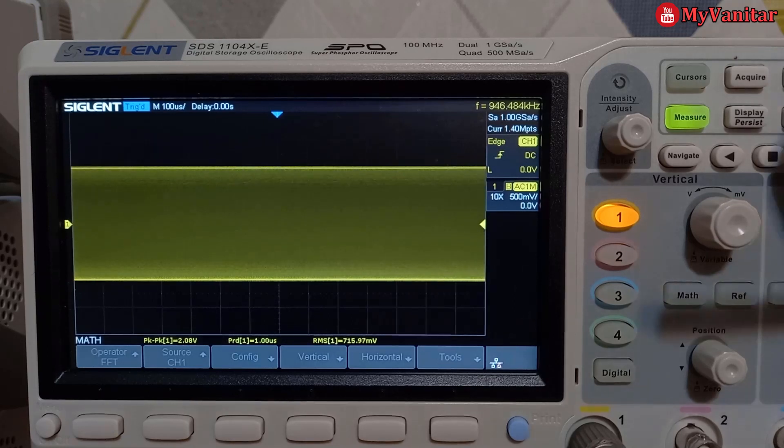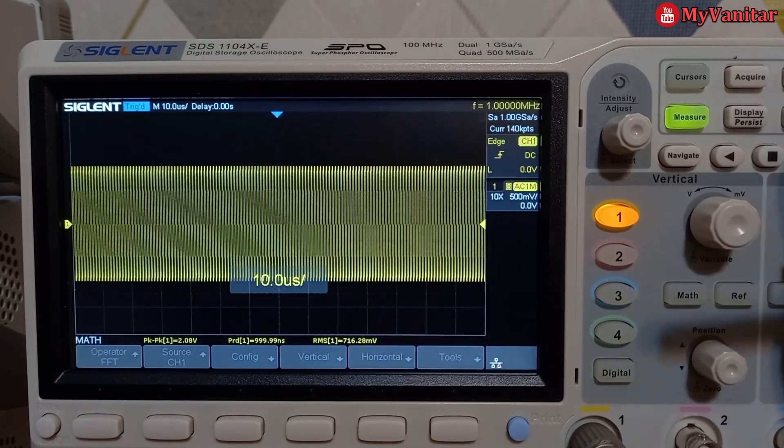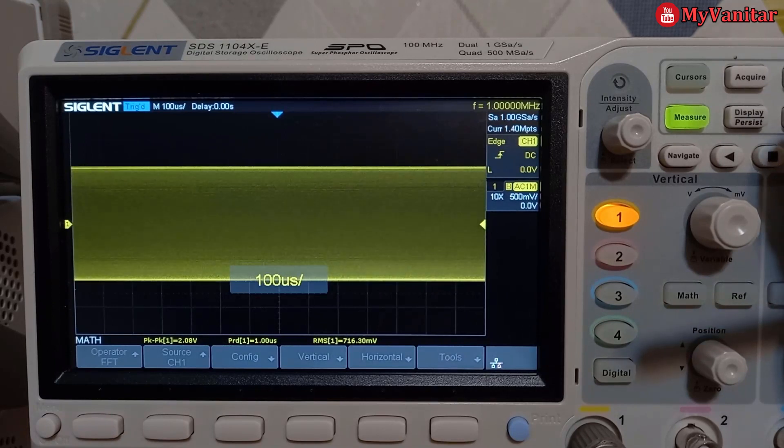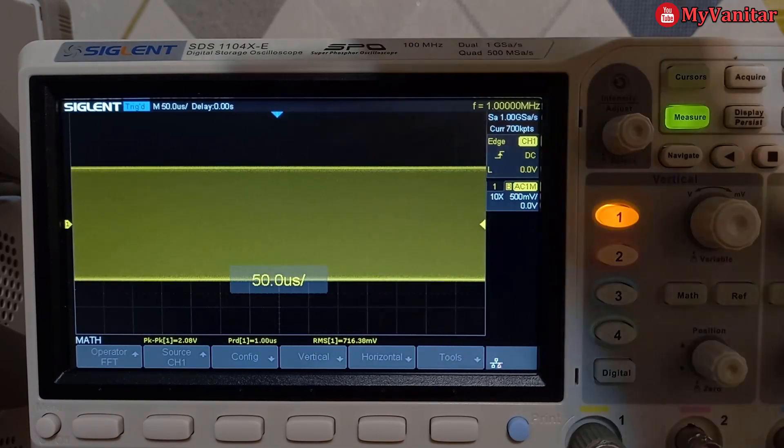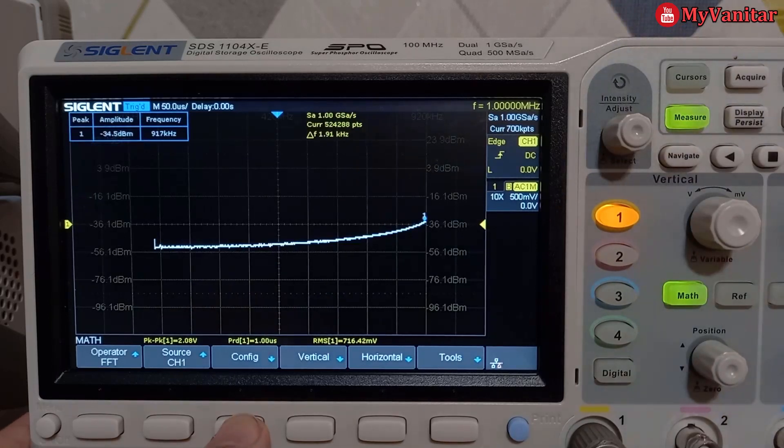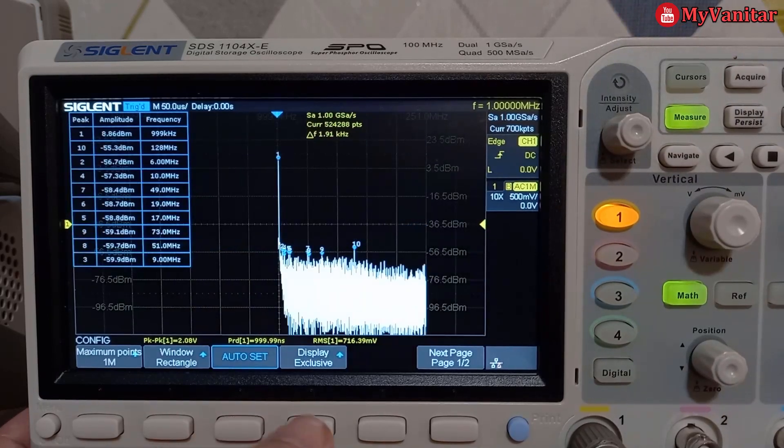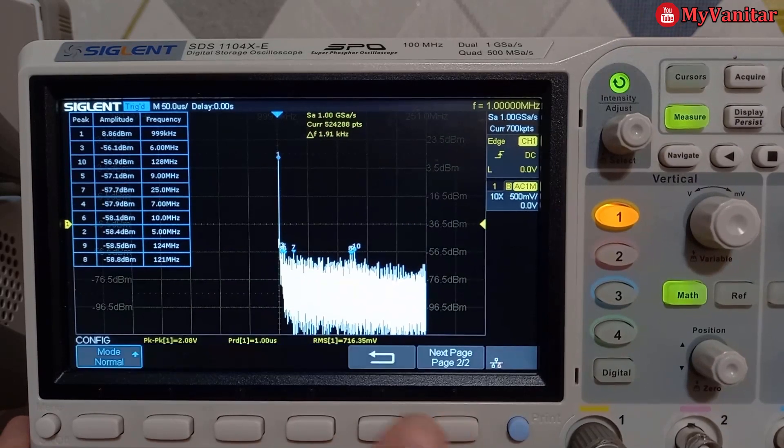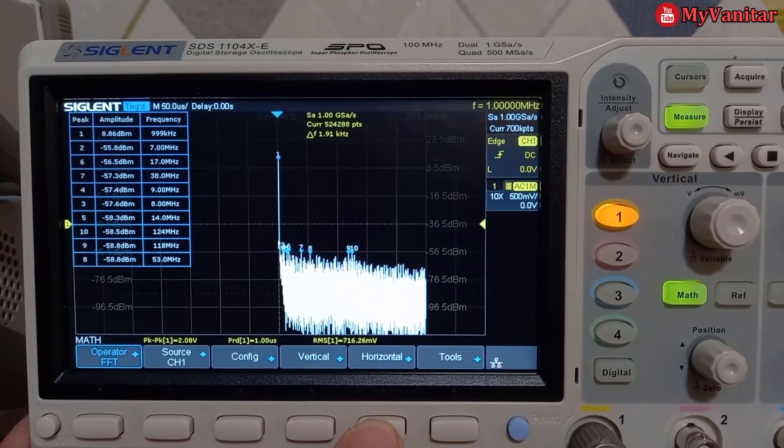Sine wave. So this should be like this, do you see that, a straight line? So let's go to the math function. The first step is auto set, then come here, horizontal.